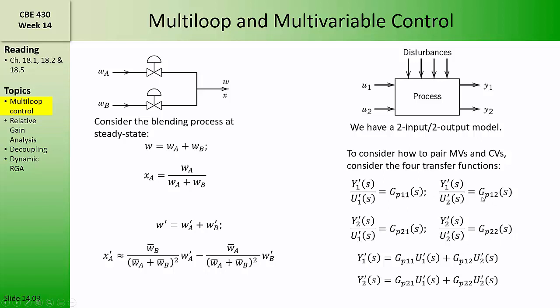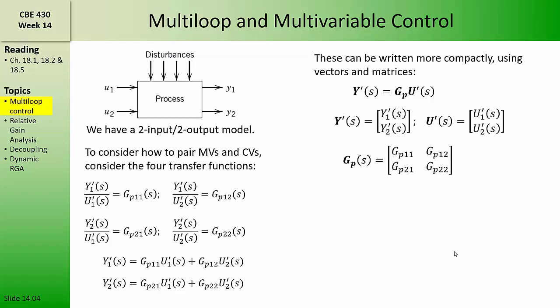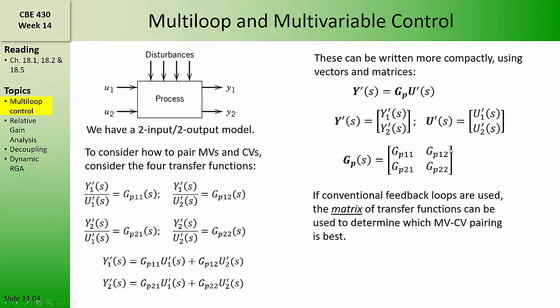It's important to note the indices here, where the first index is the controlled variable Y, and the second index refers to the manipulated variable U. The linearized model equations, when converted to the Laplace domain, can be represented in matrix and vector form, where the bold symbol Y represents the vector of controlled variables, the bold symbol U represents the vector of manipulated variables, and the bold symbol GP is the matrix of process transfer functions, containing GP11, GP12, GP21, and GP22. Then we can write the whole system in a single equation: Y equals GPU. This matrix of transfer functions can be used to determine which manipulated variable-controlled variable pairing is best for conventional feedback control loops.